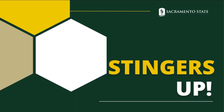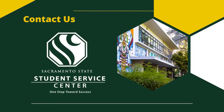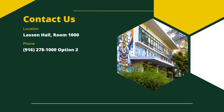And that's it! You got this, Hornet! Stingers up! If you have any questions, feel free to reach out to our office, the Student Service Center. We are located in Lassen Hall, room 1000. You can reach out to us via phone at 916-278-1000, option 2, or email at sacstatessc@csus.edu.